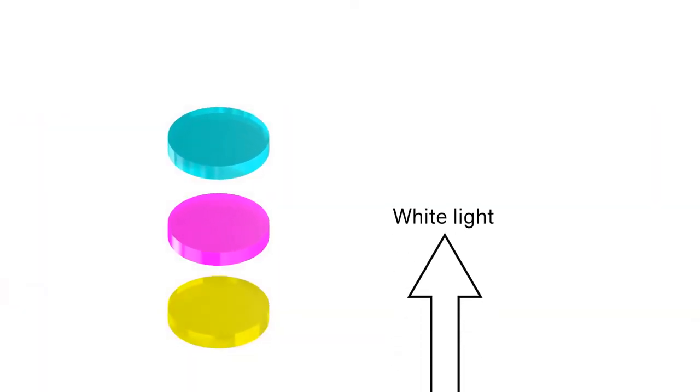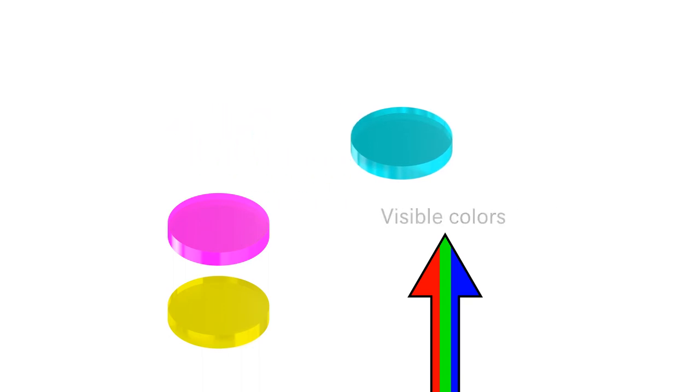The white light coming up from below actually contains all the colors of the rainbow, but the human eye only has color receptors for seeing red, green, and blue light. As this light passes through the cyan ink, the red light gets absorbed, while green and blue light are able to pass through.